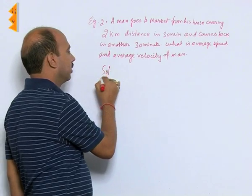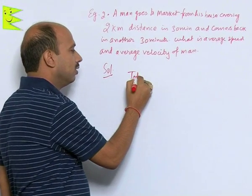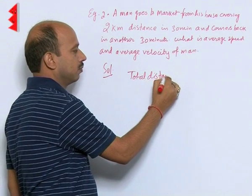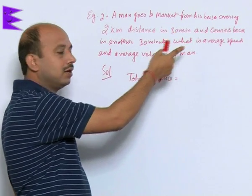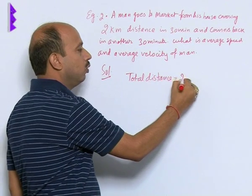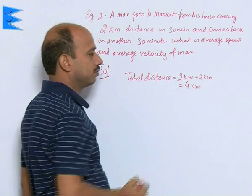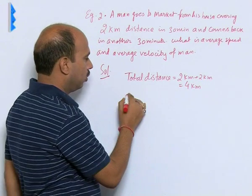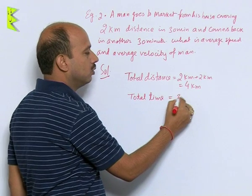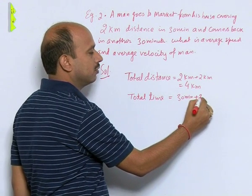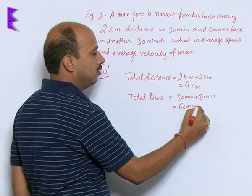First find total distance: 2 kilometers going to market plus 2 kilometers coming back equals 4 kilometers. Total time is 30 minutes going plus 30 minutes coming back, which equals 60 minutes or 1 hour.